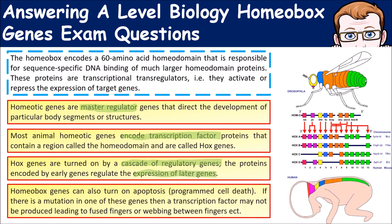Quite importantly, homeobox genes can also turn on apoptosis — remember, apoptosis is programmed cell death. So if there's a mutation in one of these genes, the transcription factor may not be produced, leading to things like fused fingers, where the webbing between the fingers does not break down.